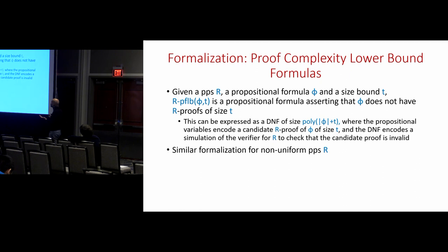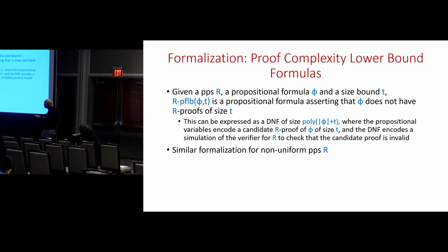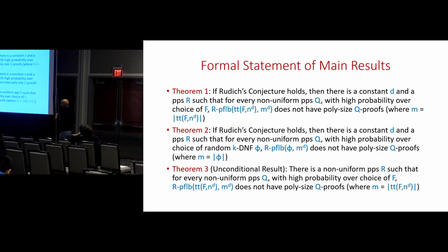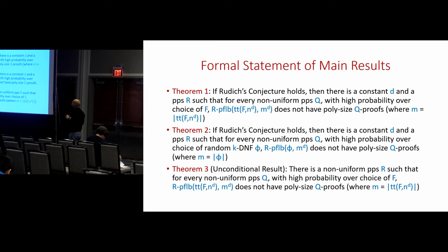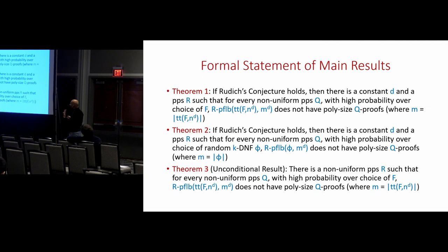There is a standard formalization: similar to the circuit lower bound tautology, you can formalize a proof lower bound tautology — a propositional formula which, given φ and t, says that φ doesn't have R-proofs of size t. Because R is a propositional proof system, this can be formalized as a propositional formula, and similarly for non-uniform proof systems. With these formalizations, here are the precise theorem statements: if Rudich's conjecture holds and these tautologies are indeed hard, then there is a proof system R for which proof complexity lower bounds are hard to show. A similar result holds for random k-DNFs. The unconditional result follows from these using the win-win argument sketched earlier.